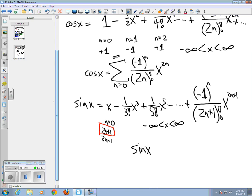So, sine x looks like the sum from n equals 0 to infinity of negative 1 to the n over 2n plus 1 factorial, and then x to the 2n plus 1 power.